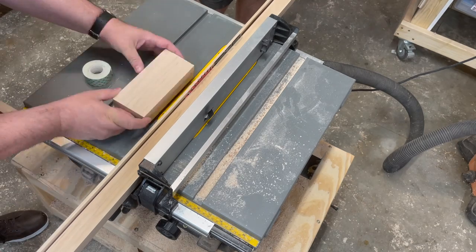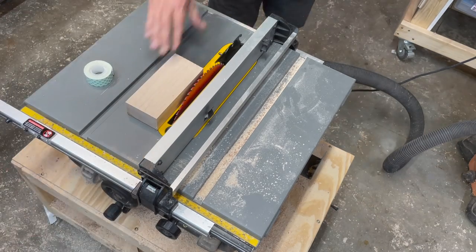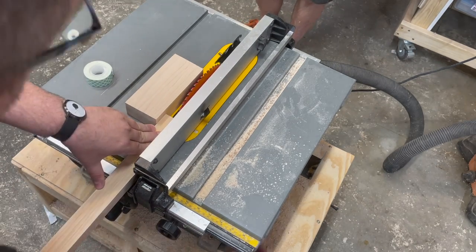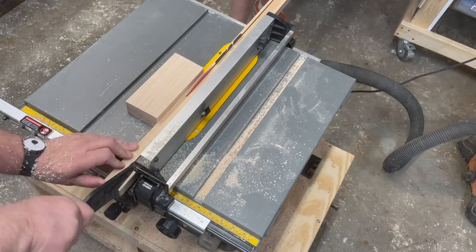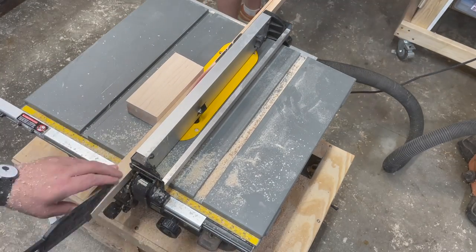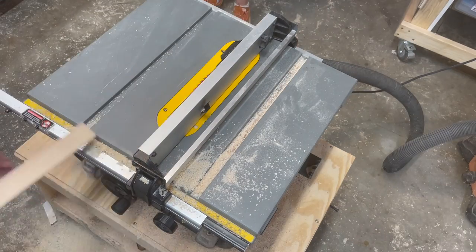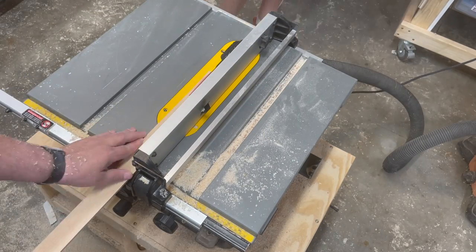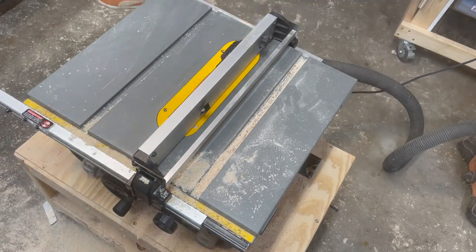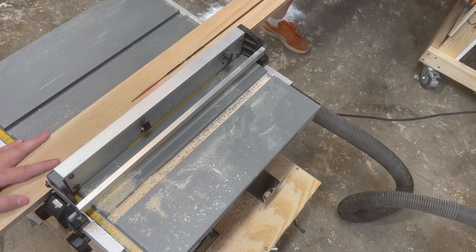We're setting up our table saw with a block and tape to get our quarter inch strips that'll be the trim on the outside. We can just run a piece through, adjust the fence, run another piece through, and continue to get consistently sized pieces. We cut everything to width and set things up to cut our hickory 1x2s.